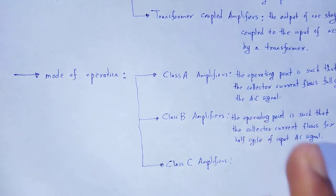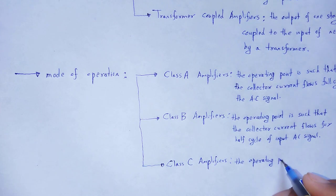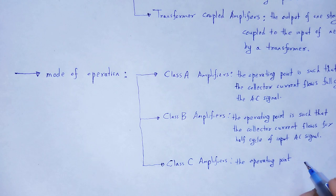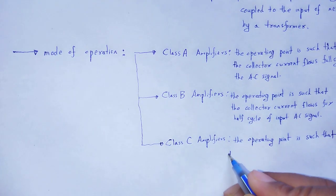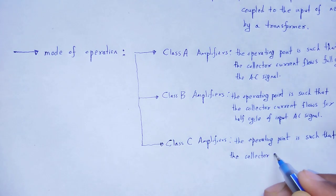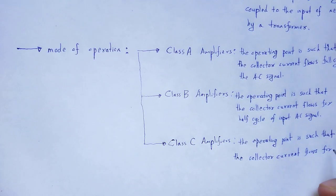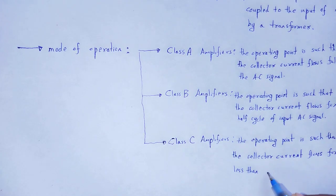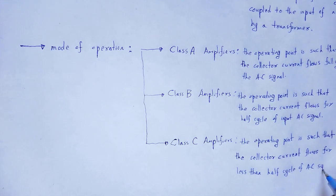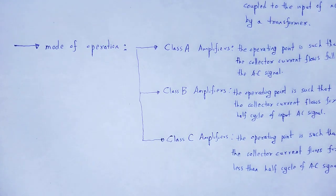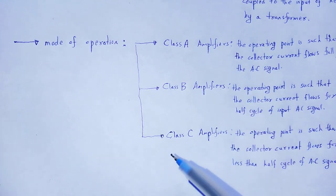For class C amplifiers, the operating point — also called the Q point or quiescent point — is such that the collector current flows for less than half cycle of the AC signal. On that basis of mode of operation, amplifiers are classified as class A, class B, and class C amplifiers.